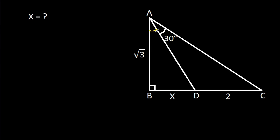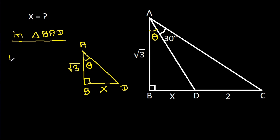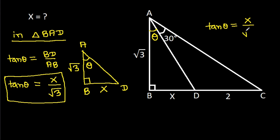Suppose this angle is theta. Then in triangle BAD, BD is X and AB is square root of 3. This angle is 90 degrees and this angle is theta. So tan theta will be equal to BD by AB, which gives tan theta equals X by square root of 3.